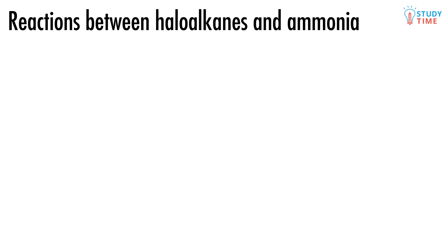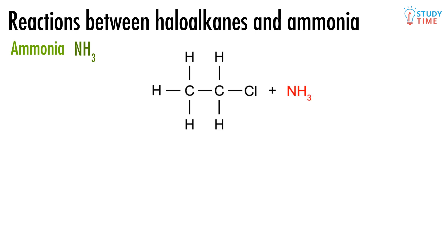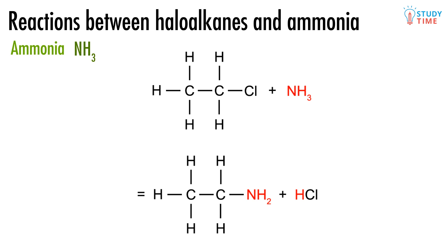First we are going to look at how haloalkanes react with ammonia. Ammonia is a colourless gas with a truly horrid smell and it has a formula of NH3. Let's look at the reaction of ammonia and a simple haloalkane, like chloroethane. Do you see why this is counted as another substitution reaction? The nitrogen and two of the hydrogen atoms from the ammonia have been swapped for the chlorine atom that was originally stuck onto the haloalkane.